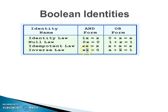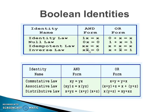The Inverse Law states that ANDing or ORing a variable with its complement gives the output as shown in the figure. Other Boolean identities include Commutative Law, Associative Law, and Distributive Law. Commutative Law tells us the order of variables is not important. Associative Law tells us the grouping by brackets is also not important — both sides are the same. Distributive Law gives an idea of how to distribute variables so that it can be used for reduction of digital circuits.